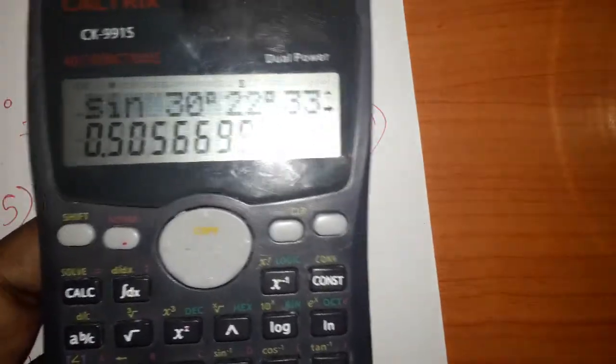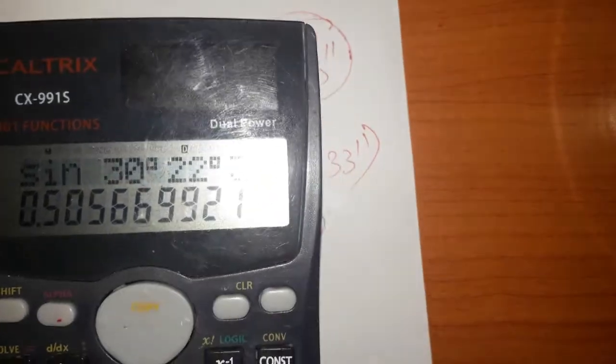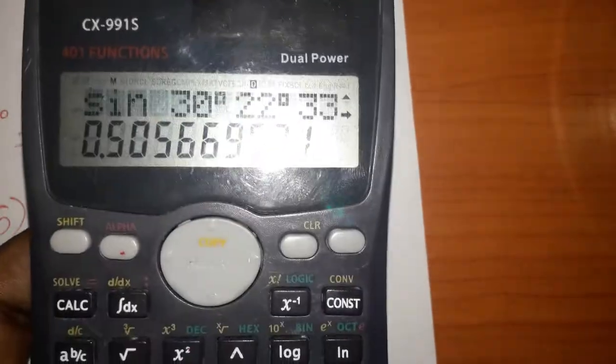approximately 0.5. Now we have the value of sin 30 degrees, 22 minutes, and 33 seconds. Thank you.